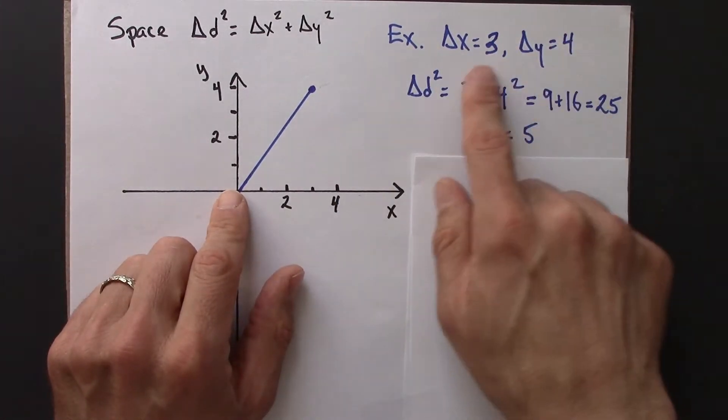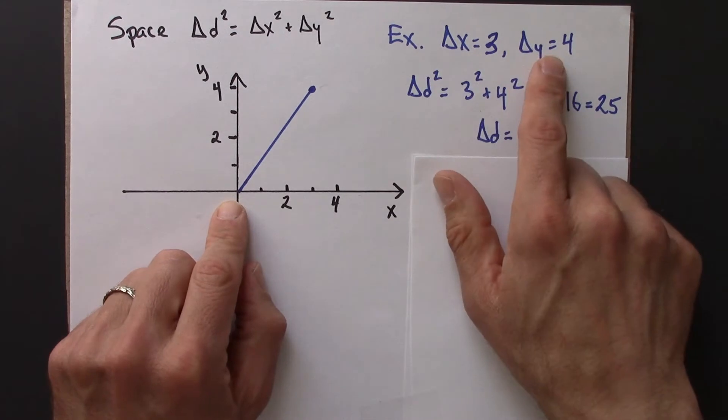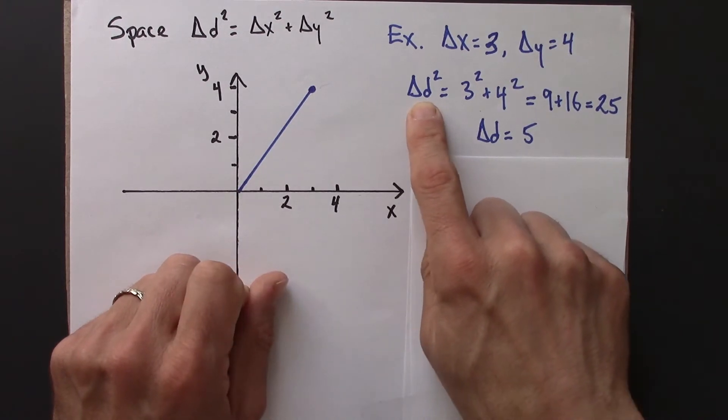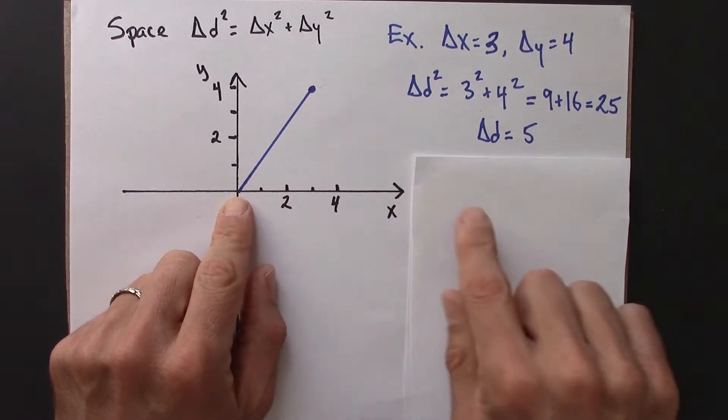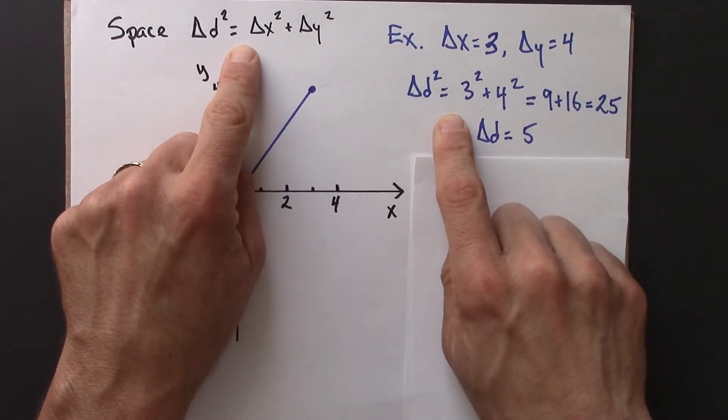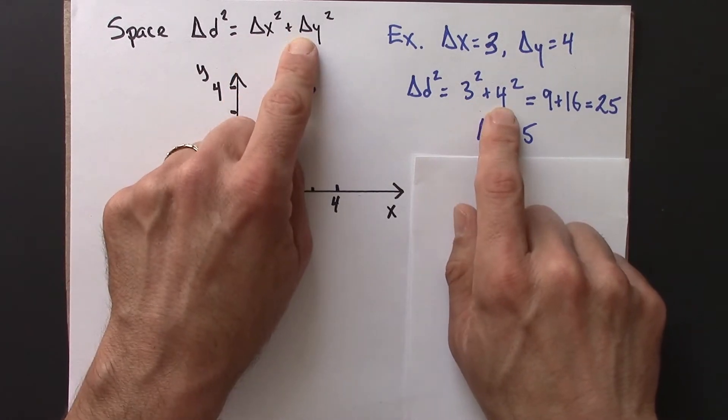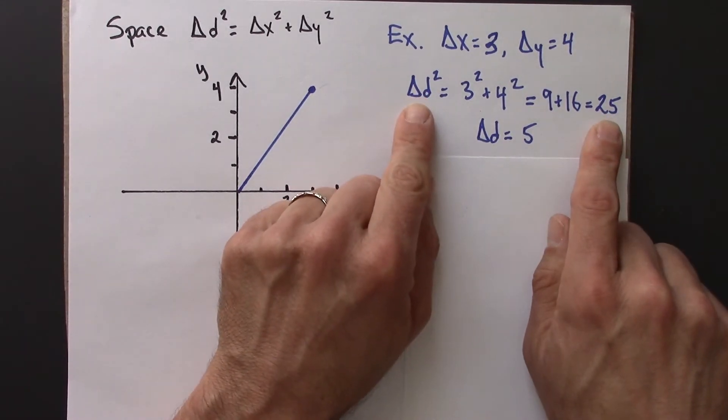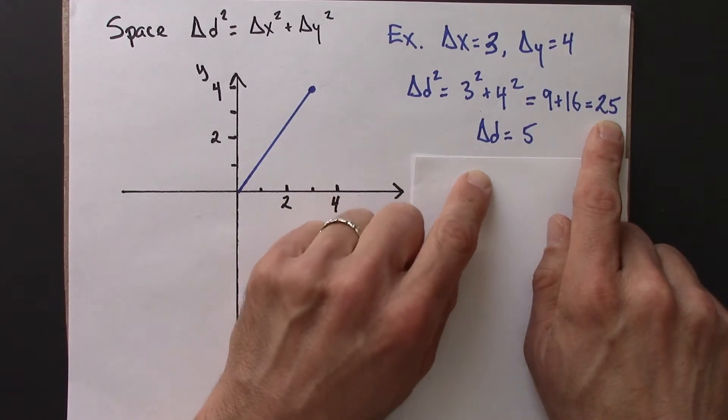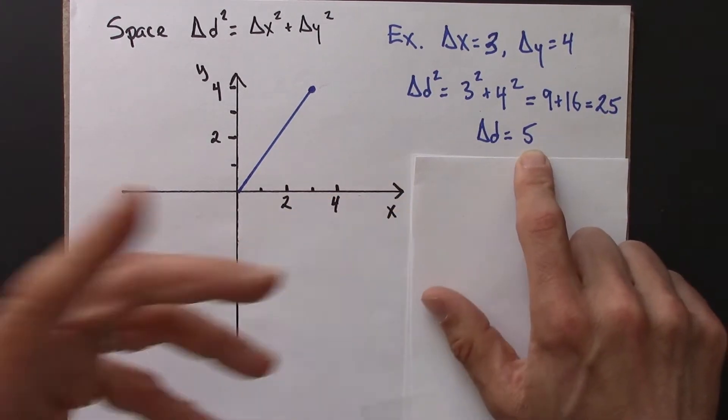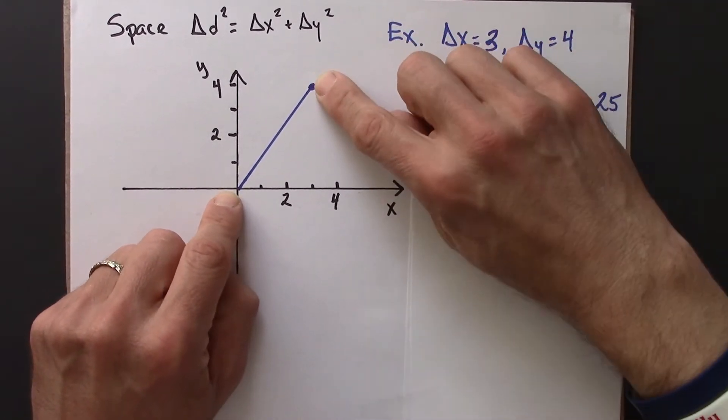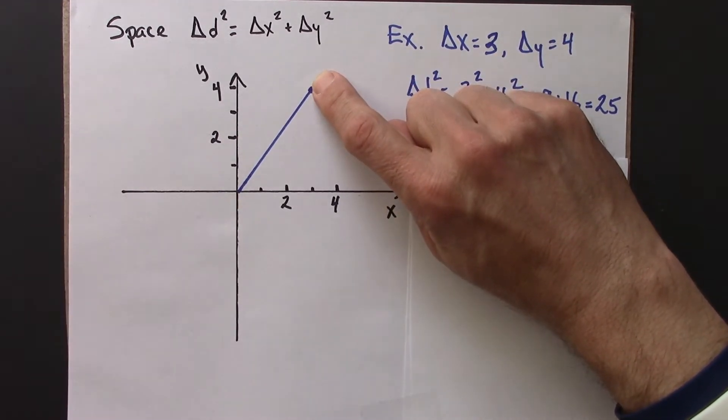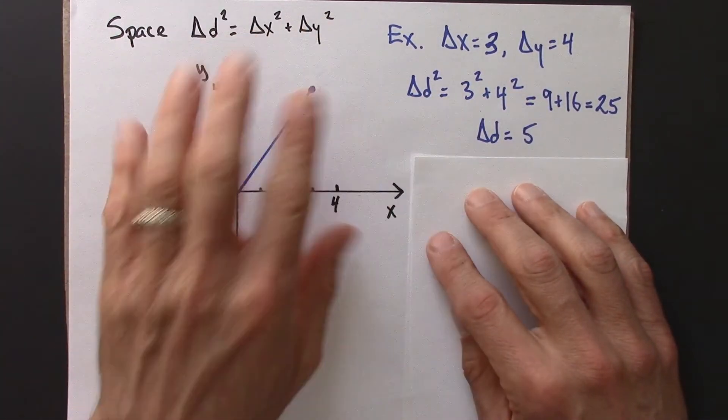So just some numbers for this example. If delta x is 3 and delta y is 4, over 3, up 4, we can calculate that the distance between the points is 5. This is a 3, 4, 5 triangle. Plugging into this formula, delta x 3 squared, delta y 4 squared, that's 9 plus 16, which is 25. Take the square root of both sides, square root of d squared is d, square root of 25 is 5. So the distance between these two points is 5. And that's something that observers in different coordinate systems should agree on. This is something that's physical. It shouldn't depend on how we orient our axes.